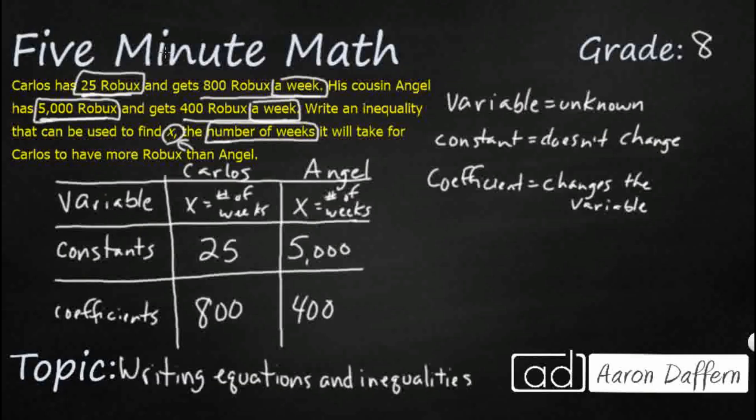So let's see if we can put these together. So Carlos has... I'm going to put my coefficient variable first. 800 Robux a week. 800X. Plus, what's he start with? He starts with 25. Now we want to know how many weeks it'll take for Carlos to have more than. So we're going to go greater than.